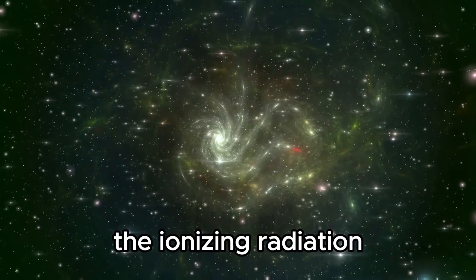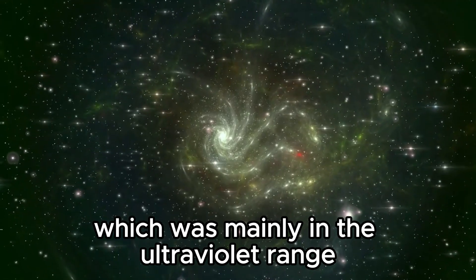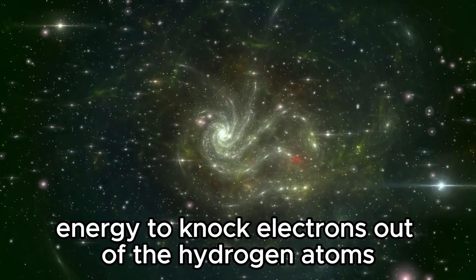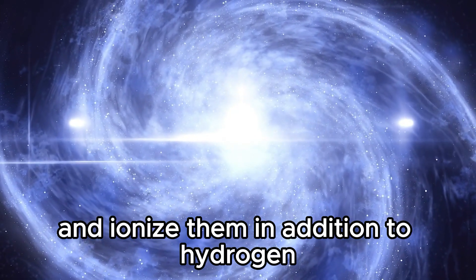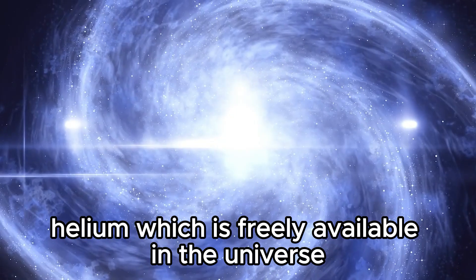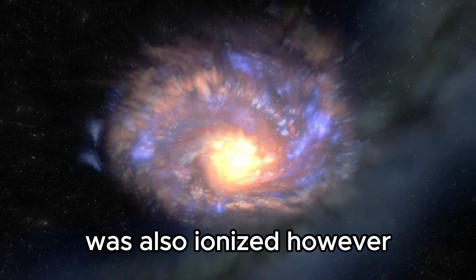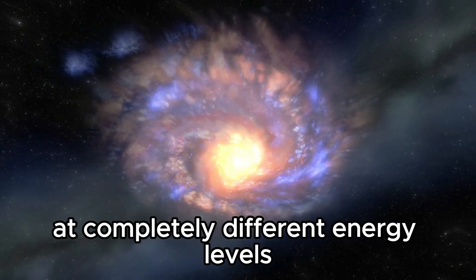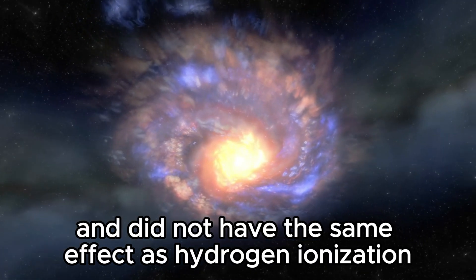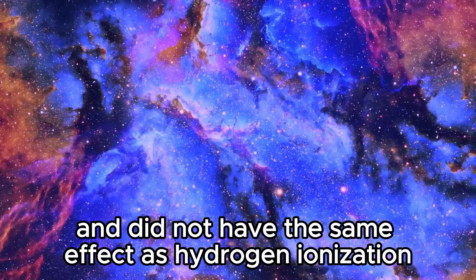The chemical processes during reionization were complex. The ionizing radiation, which was mainly in the ultraviolet range, had enough energy to knock electrons out of the hydrogen atoms and ionize them. In addition to hydrogen, helium, which is freely available in the universe, was also ionized. However, these processes took place at completely different energy levels and did not have the same effect as hydrogen ionization.